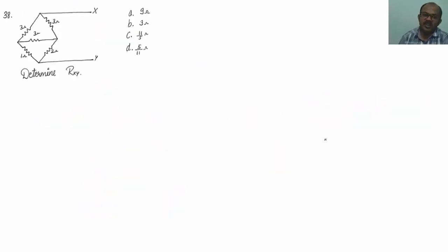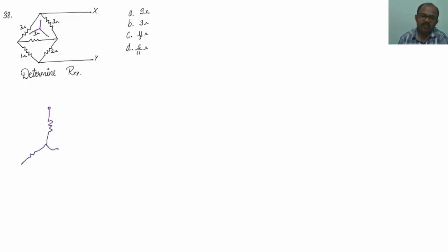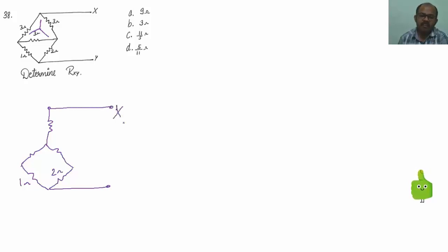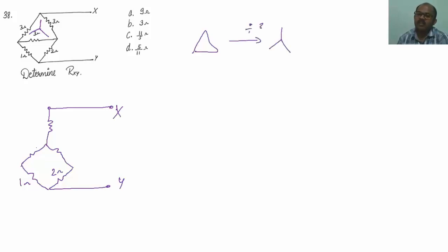Let me solve the 38th question. The question is based on star-to-delta and delta-to-star conversion. We have a delta-connected network. Let me convert this to a star network, so I will be getting one resistor, one more resistor, and one more resistor. When all impedances are equal in a delta network and you convert to a star network, it is divided by 3. So I will be getting 1 ohm, 1 ohm, 1 ohm. This resistance is 1 ohm and this resistance is 2 ohms.